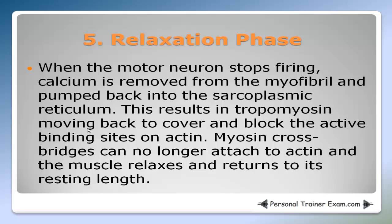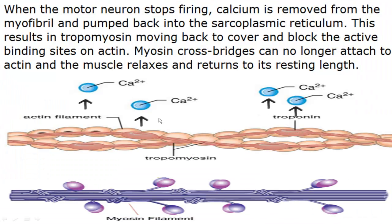The fifth and final phase of the sliding filament theory of muscular contraction is the relaxation phase. When the motor neuron stops firing, calcium is removed from the myofibril and pumped back into the sarcoplasmic reticulum — the storage site for calcium ions in skeletal muscle. This results in tropomyosin moving back to cover and block the active binding sites on actin. The motor neuron stops firing and calcium that was attached to troponin is pumped back into the sarcoplasmic reticulum.